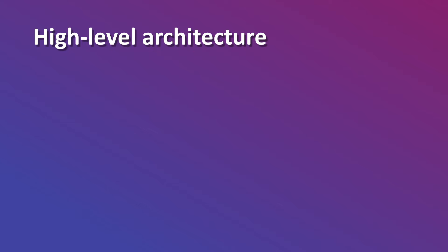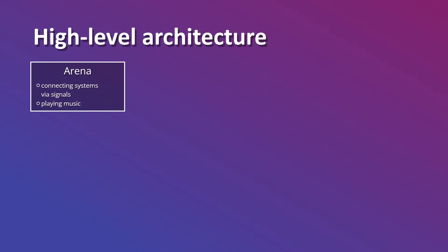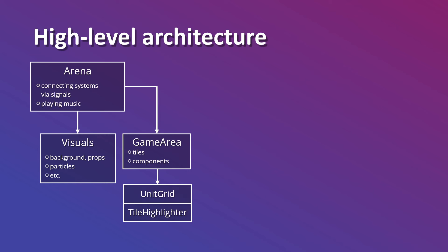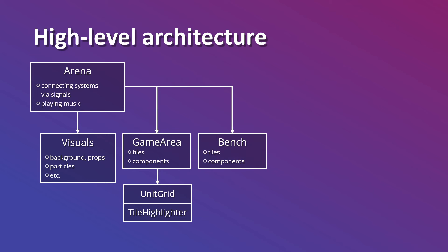So what about the architecture of this game? On the very top we have the root node called the Arena, and its only real responsibility is to connect the different systems together with signals — other than that it just plays the music. Under the Arena we'll have a node called Visuals, which contains all the visual stuff like the background tiles, props, particle systems, and so on. Then we have the game area in the middle, which has the checkerboard style tiles and components: the unit grid and the tile highlighter. Then we have the bench, which is pretty similar but just holds your current units not in play — it also has a unit grid and tile highlighter.